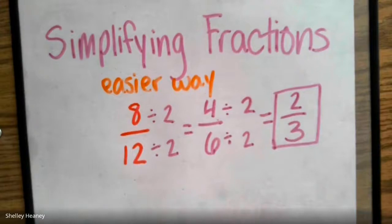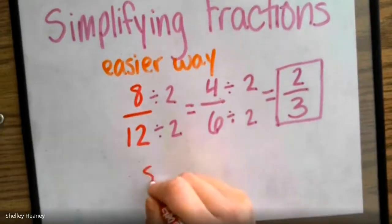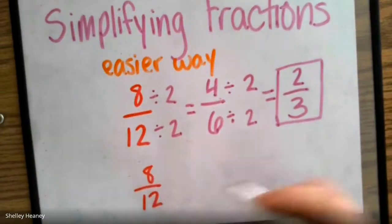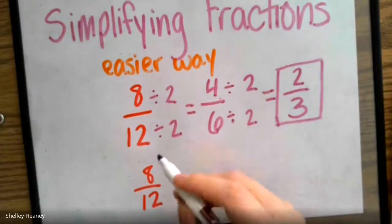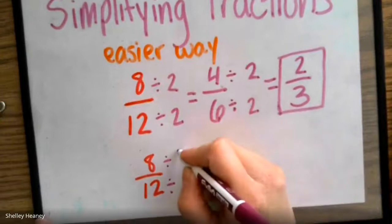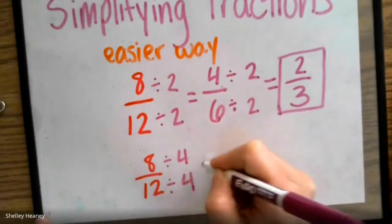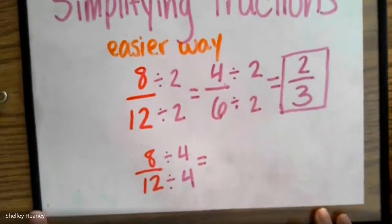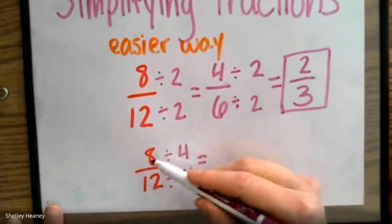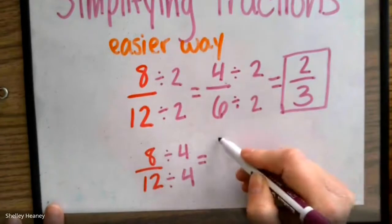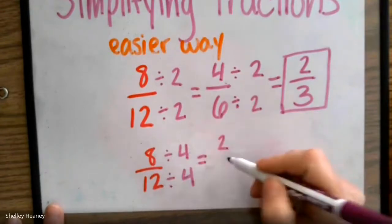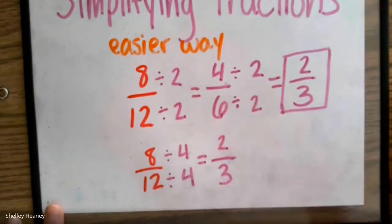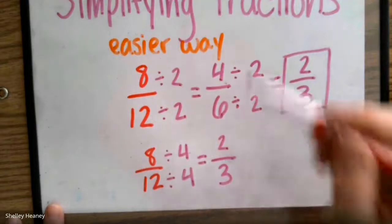Was there a different way to do this? Absolutely. We could have divided 8 twelfths by a different number. And maybe you were thinking of the same number. 8 divided by 4 and 12 divided by 4 could have been done just the same. There is sometimes more than one way to do a problem. 8 divided by 4 would have given us 2 and 12 divided by 4 would have given us 3. How do both of these work?